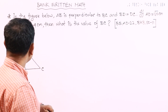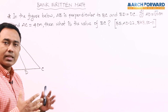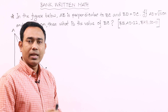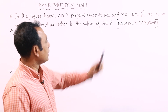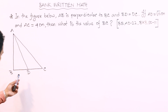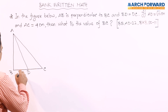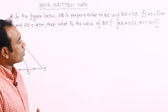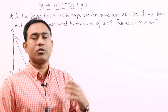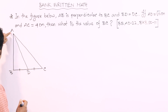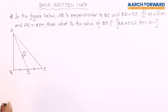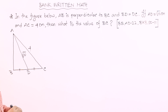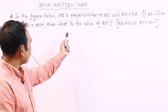Now we are going to talk about the figure below. AB is perpendicular to BC and BD equals DC. If AD equals square root of 10 cm and AC equals 4 cm, then what is the value of BC?